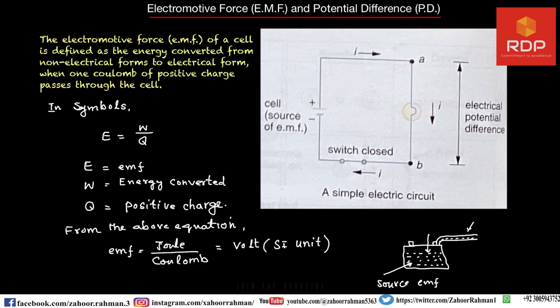A positive charge enters the source of EMF at its lower potential point — the negative terminal. The EMF of the source does work on the positive charge to enable it to go to the point of higher potential — the positive terminal. A point of high potential is a region where there is a larger number of positive charges; a point of low potential is a region where there is a lesser number of positive charges or more negative charges.